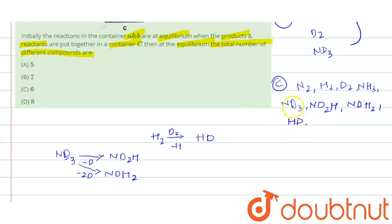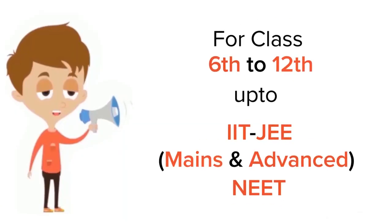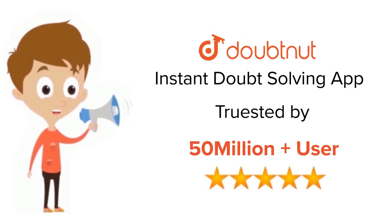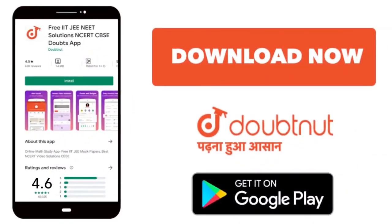So the total compounds in container C are: N₂, H₂, D₂, NH₃, ND₃, ND₂H, NDH₂, and HD — that is 8 compounds. Looking at the options: A is 5, B is 7, C is 6, and D is 8. So option D, 8, is the right answer. For class 6–12, IIT-JEE and NEET level, trusted by more than 5 crore students — download Doubtnut app today.